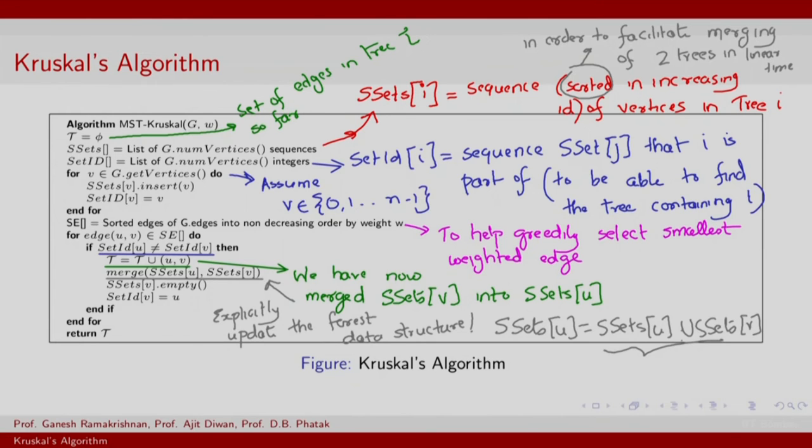However, you have merged them maintaining the sorted order and then you empty S sets v, this is the next step. And then update the set for v to be u, the set index of x for v is now set to u.